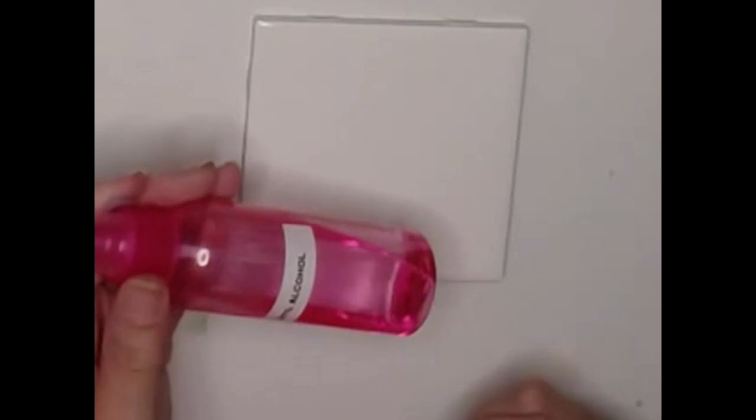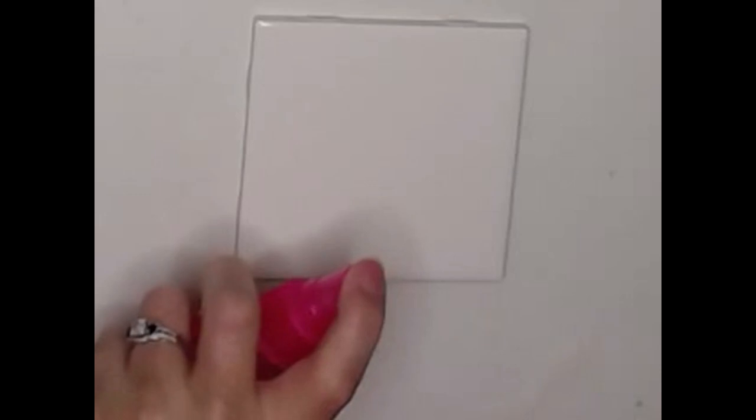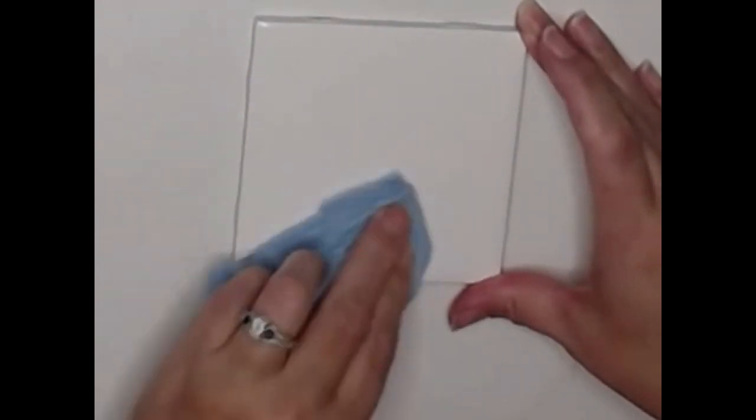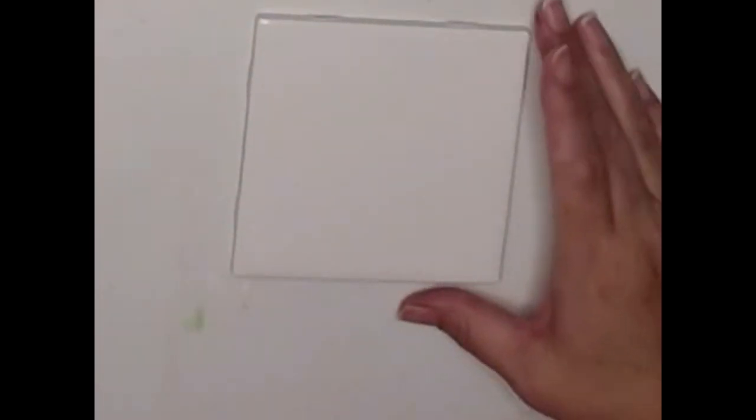Now the first thing you want to do is make sure your tiles are really clean. What I do is spray them with a solution of 91% isopropyl alcohol, and this just gets any of the grease off and prepares the surface for your alcohol inks.